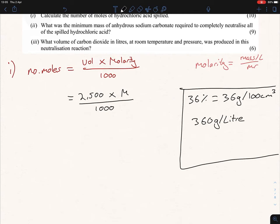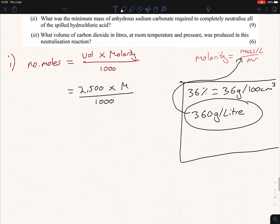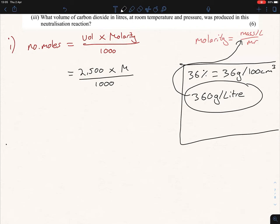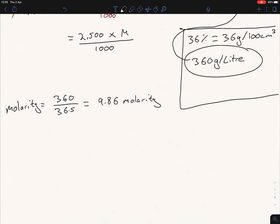Now we're going to plug that back up here and we want to find out the molarity. So the molarity equals 360 and we divide that by the Mr. The Mr of HCl is 36.5, and when you do that you'll get 9.86. That is our molarity. And now we're going to plug this in to the top equation. So we'll continue on down here. We've got 2500 times 9.86 all over a thousand, and that's our number of moles.